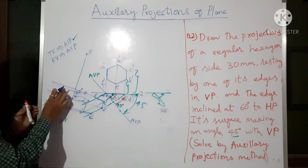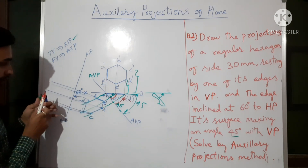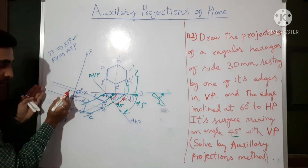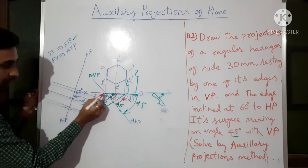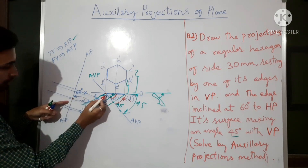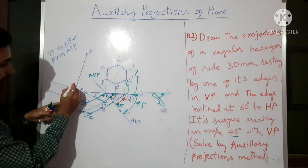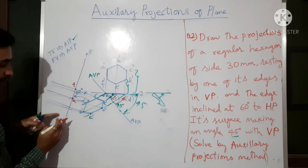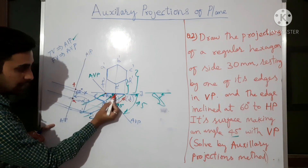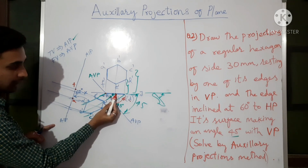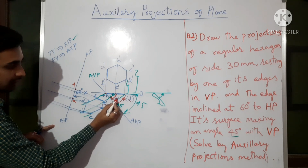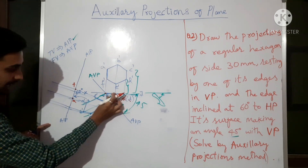This is the final front view and on the AIP we are getting the final top view. Points A and F are on the old XY line, so A and F will be at zero distance from the new AIP line. A touches here and F is here — both lie on the new XY line. Points B and E are a small distance from the XY line.